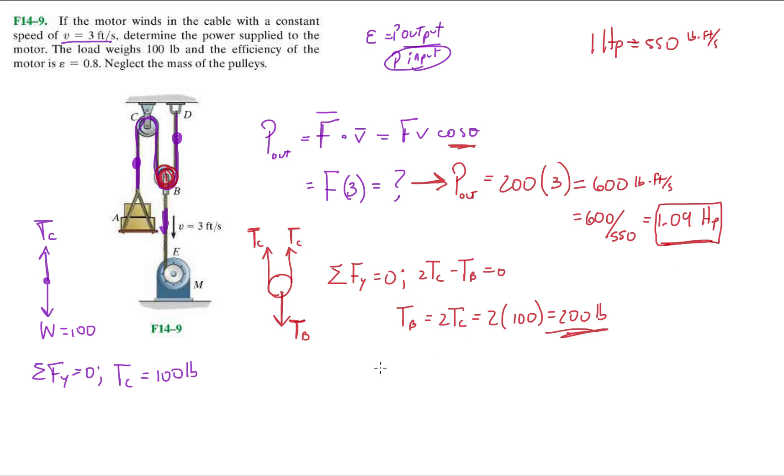So, taking this value, we're going to say, okay, my efficiency is equal to 1.09, divided by power input, and we know the efficiency is given to us by 0.8, 80% efficient.